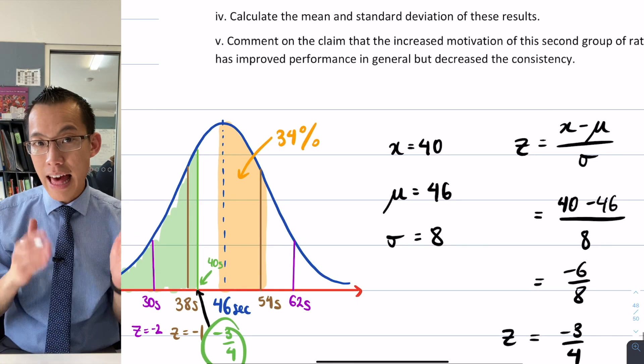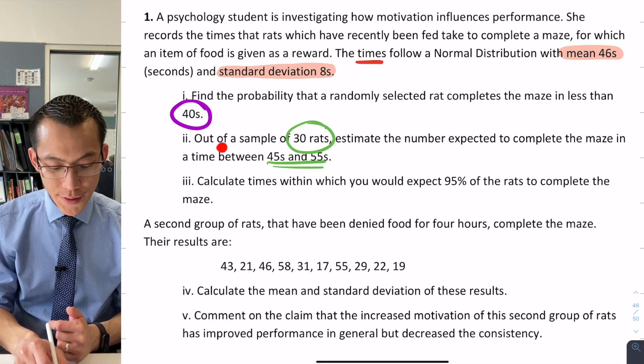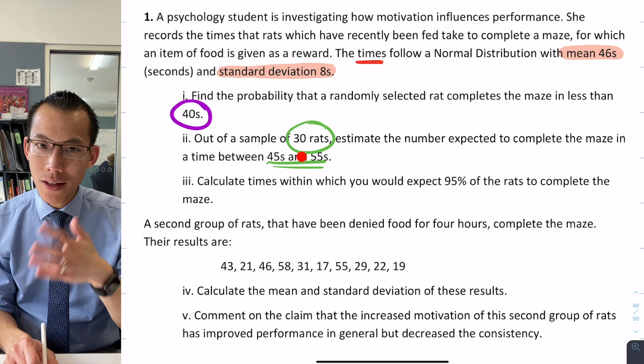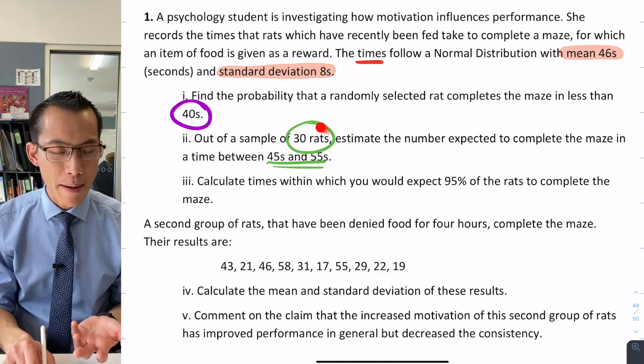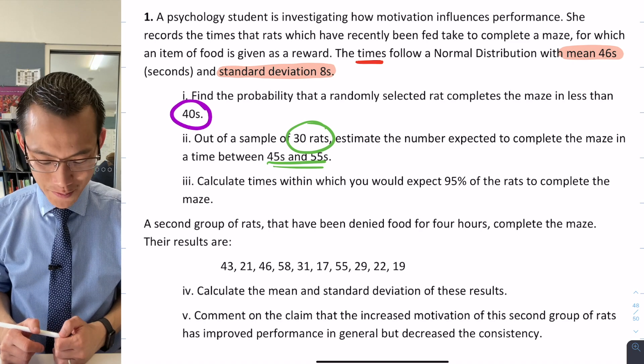But then what I want is that proportion, not just that as a percentage. I don't want the probability; I actually want the number out of a sample of 30 rats. So once I get my probability, I'll multiply that by 30, and fingers crossed that will give me an approximate number of rats. Let's have a go.